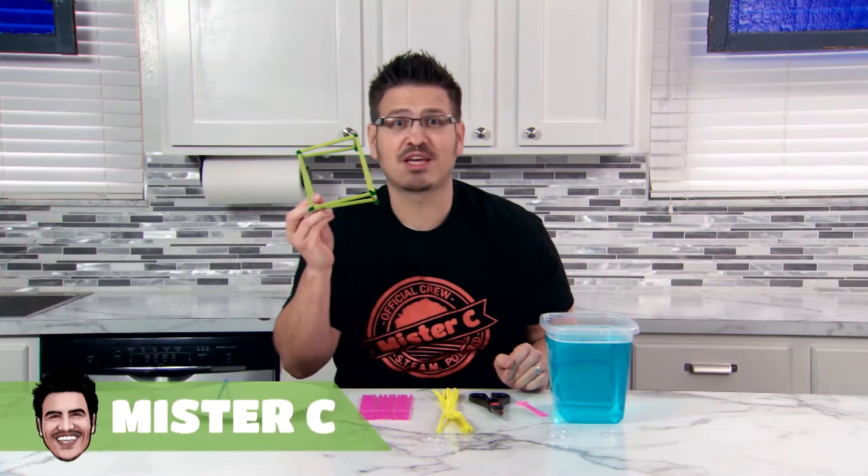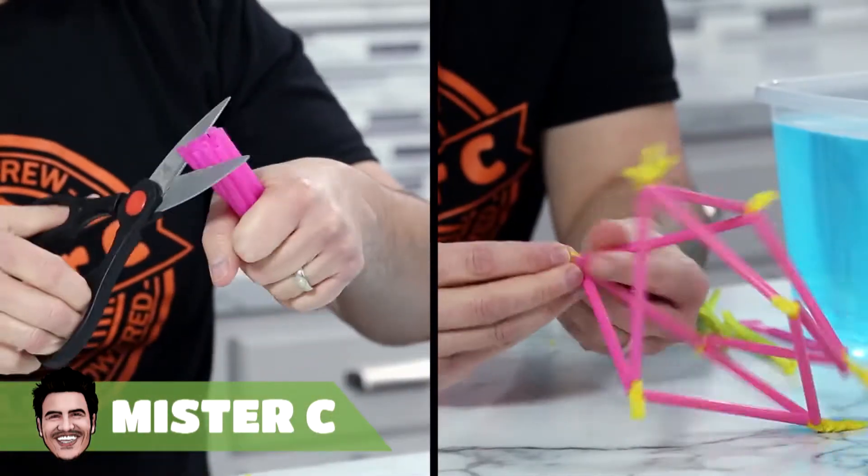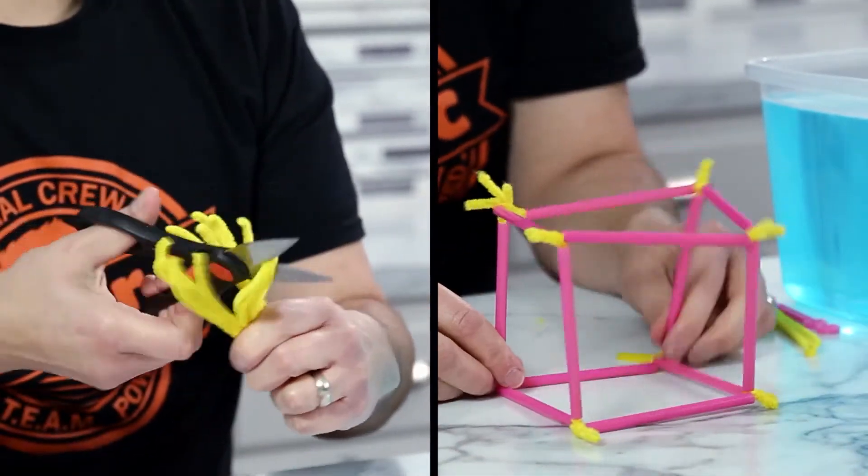Let's get three-dimensional and make cube bubbles. First, we need to build our cube using some straws and crafting stems.